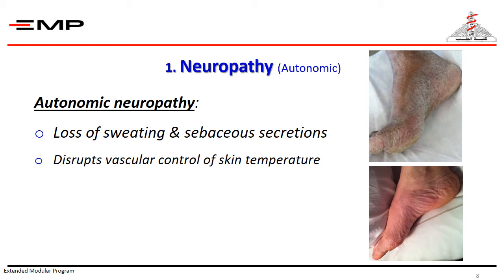Autonomic neuropathy disrupts the vascular control of skin temperature. Feet of diabetic patients are pink and warm. Arteriovenous communications beneath the skin are opened in diabetic patients, diverting nutrients away. This may explain why damaged tissues in diabetic patients heal poorly even if the injury is minor, and why some ischemic diabetic feet are still pink and warm.